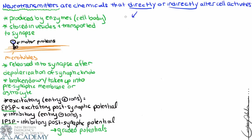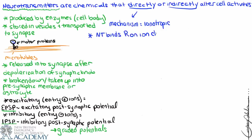Now let's talk about mechanisms — this is very important to understand because it's how we'll study all of our drugs. If a neurotransmitter acts directly, we say the mechanism is ionotropic. In an ionotropic mechanism, the neurotransmitter binds to a receptor that is an ion channel, and it affects the influx or efflux of ions.